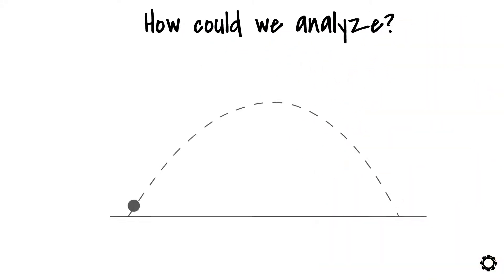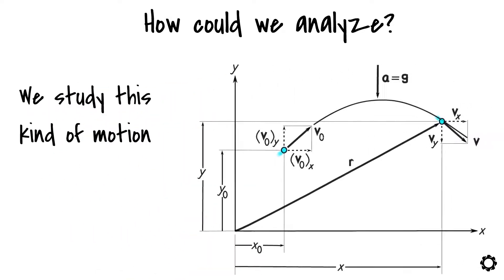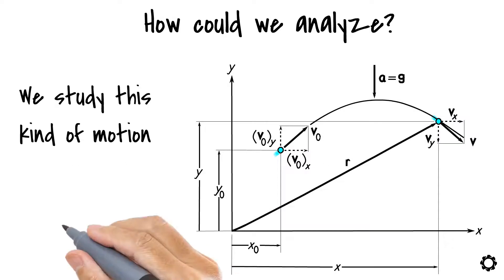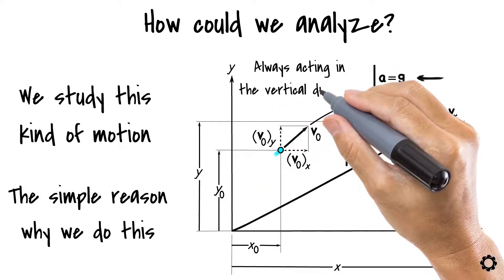So, how could we analyze the motion of a projectile? Well, most often we study this kind of motion in terms of rectangular components. Why is that? The simple reason why we do this is because the acceleration which the projectile experiences is always acting in the vertical direction.